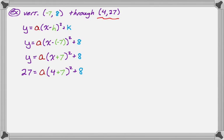And I'm going to subtract 8 from both sides. So 27 minus 8 is 19, so I'm going to get 19 equals a times the quantity 11 squared. And then I know 11 squared is 121, so 121 times a is equal to 19. So from there I now know that a is 19 over 121. And if I know that, I can write my final equation.